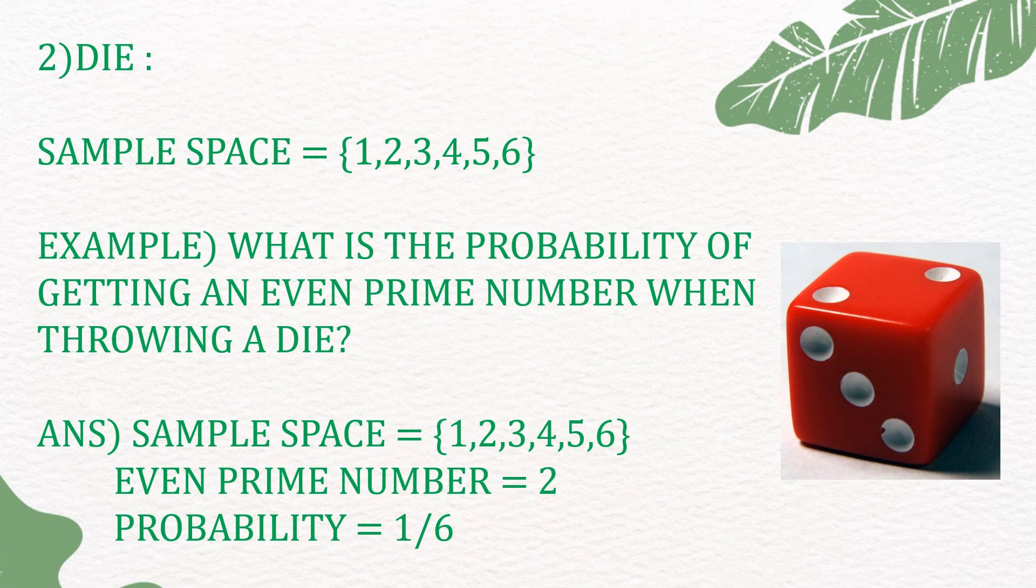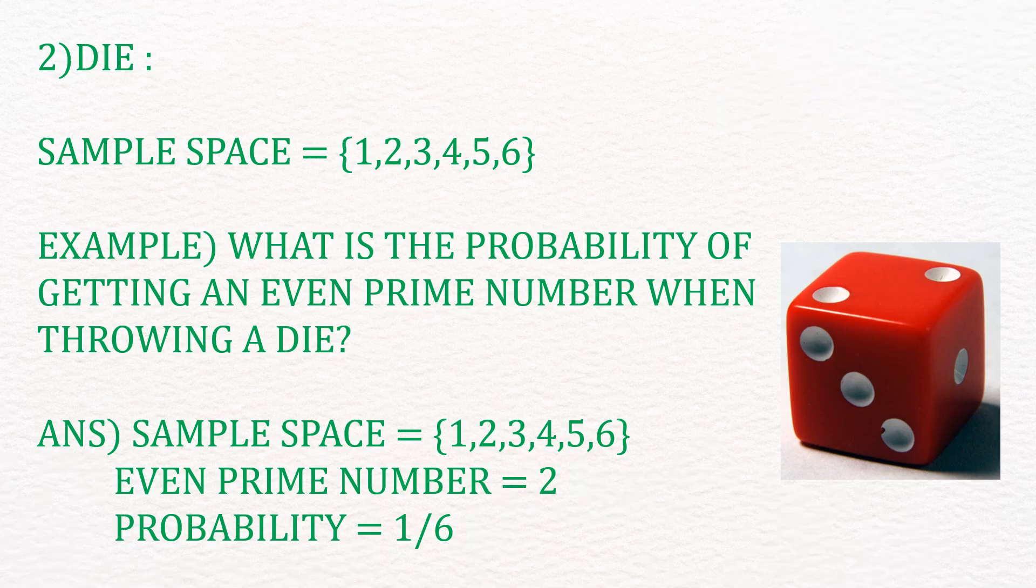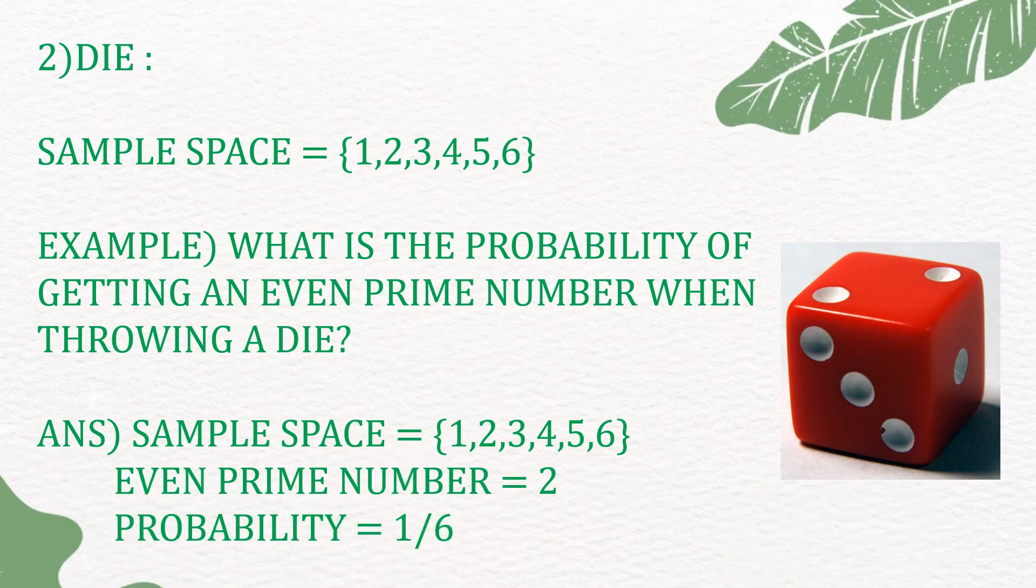2. Dice. The sample space is {1, 2, 3, 4, 5, 6}, each number corresponding to the number on the side of the dice.